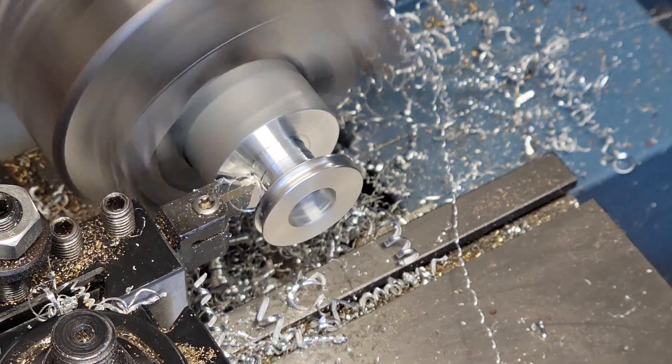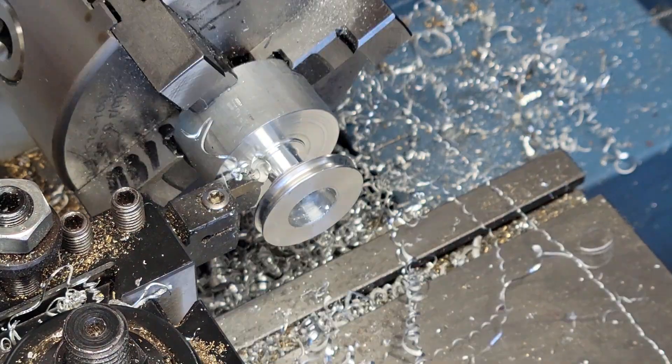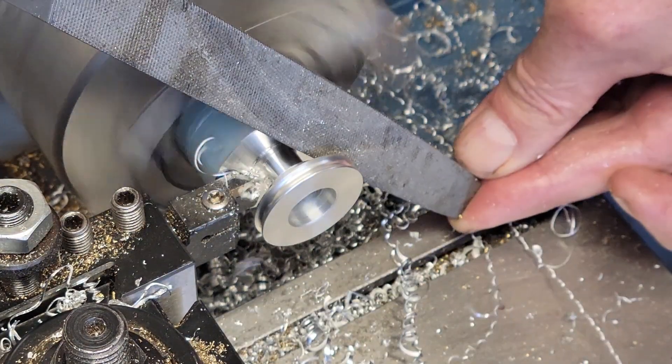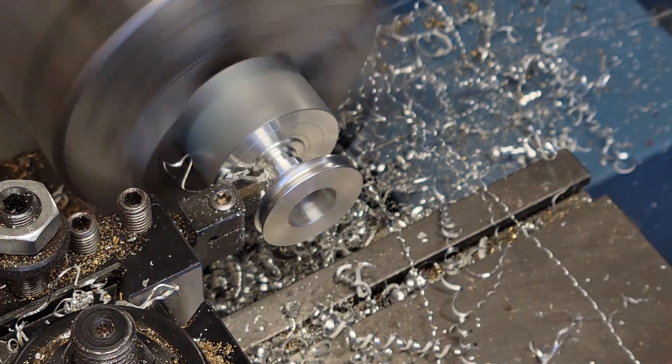A parting tool is the easiest way to finish off the required machining of our pulley. Finally, we'll part it off.